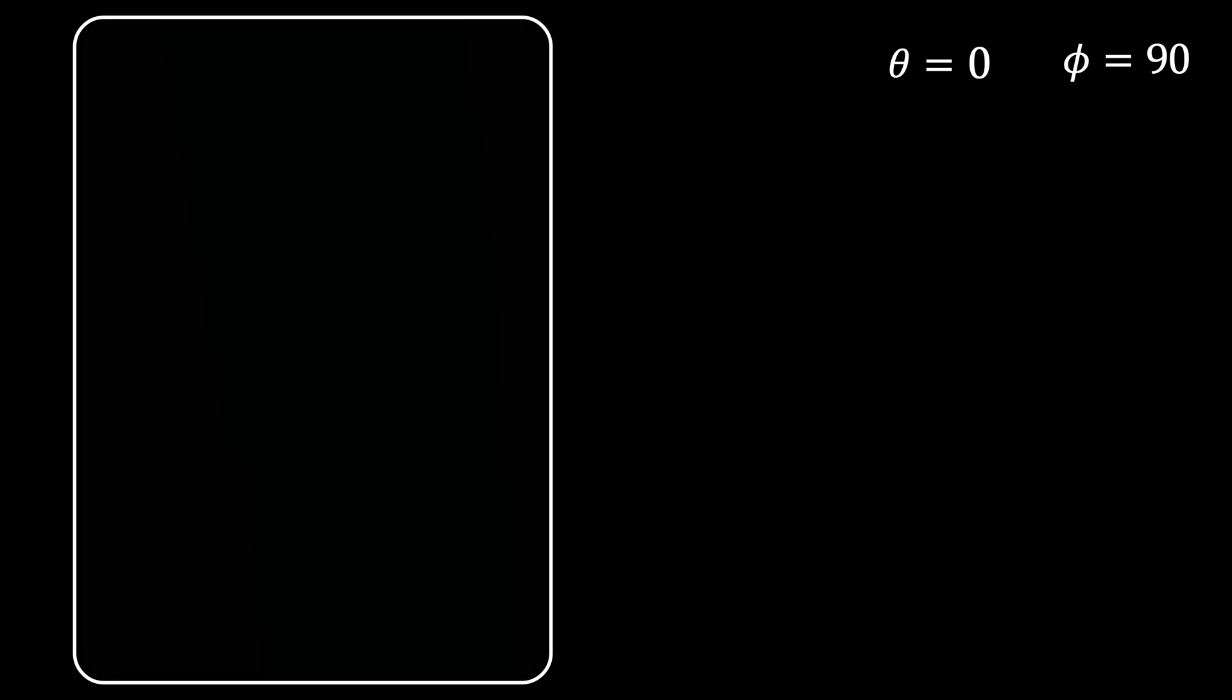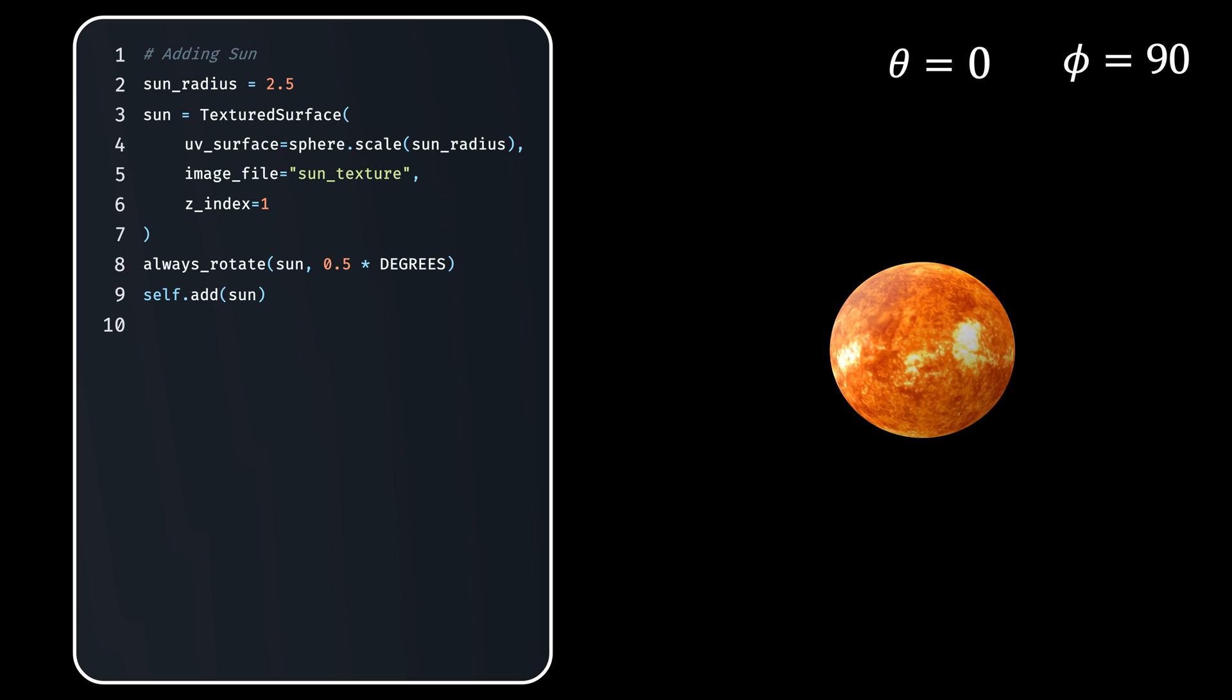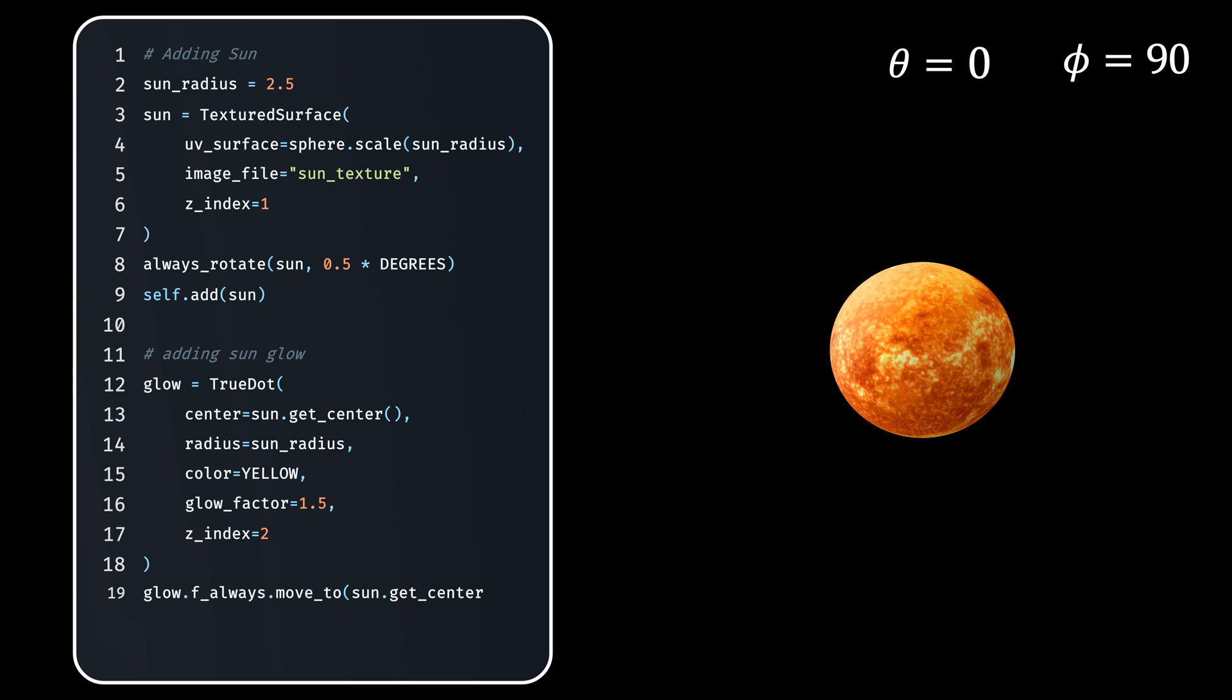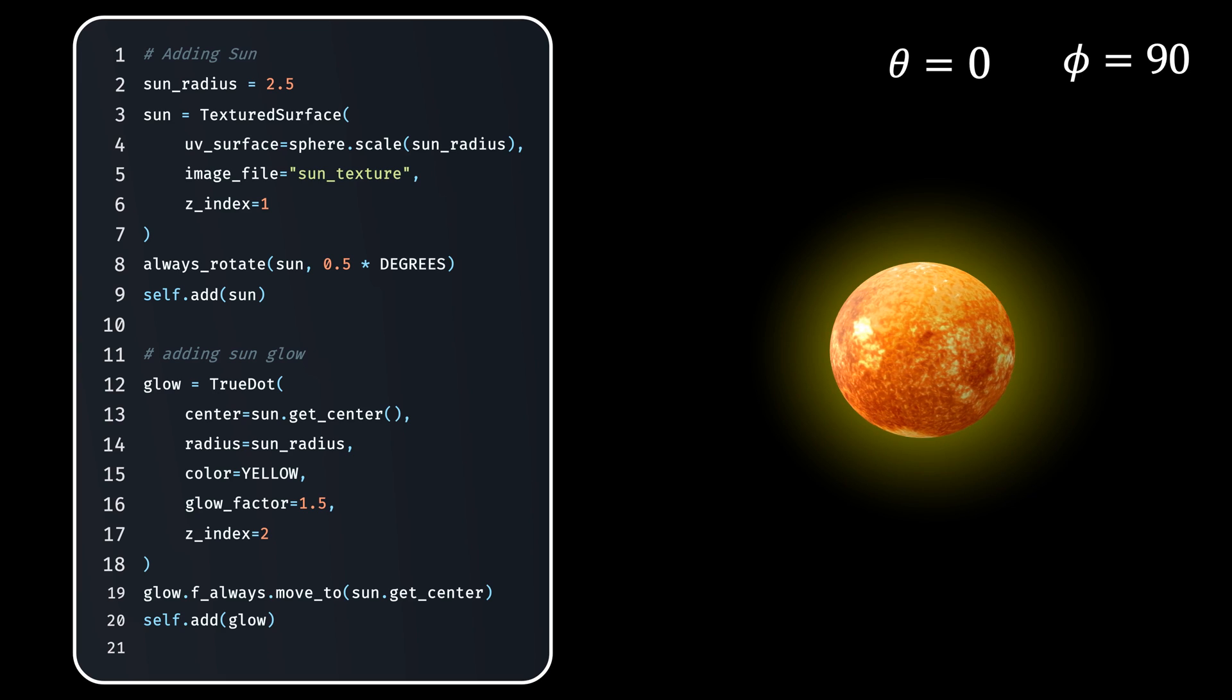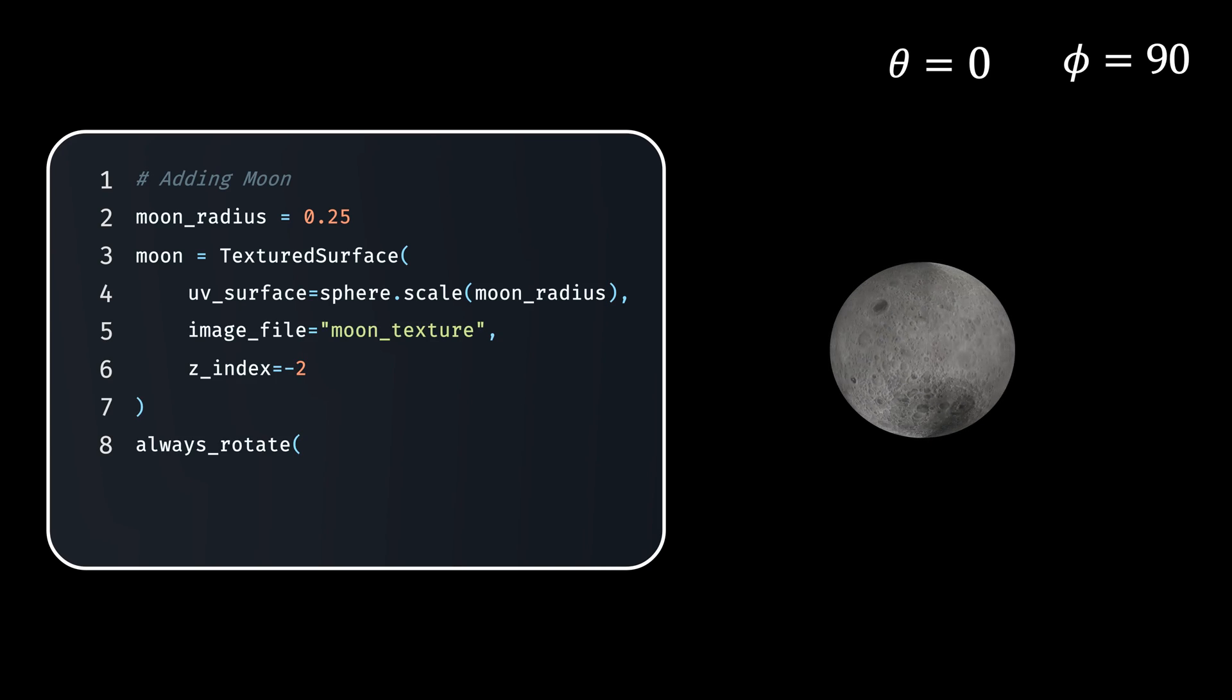Now, let's add the star of the solar system. Again, I'll provide two arguments, the UV sphere surface and the sun's texture file. And with that, the sun appears in the scene. Hmm, but there is something missing. Don't you think? I guess I need to make the sun glow. And to achieve that, I can use the TrueDot, a subclass of dot cloud and give it a yellow color with the glow factor to be 1.5. And you see, we need to ensure that this dot, this glow dot should follow the sun at all times. And of course, we wouldn't want to forget the moon, would we? And following all the process the same way, we can achieve the sun, earth and moon system.